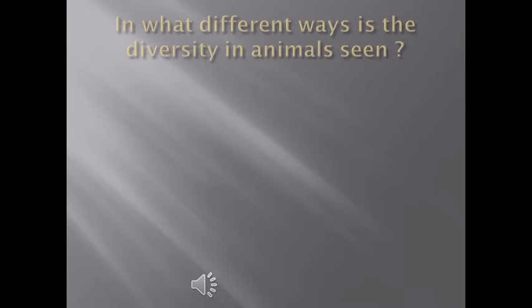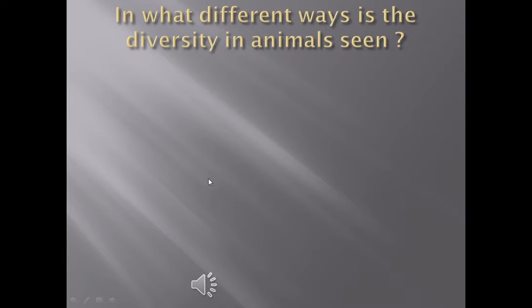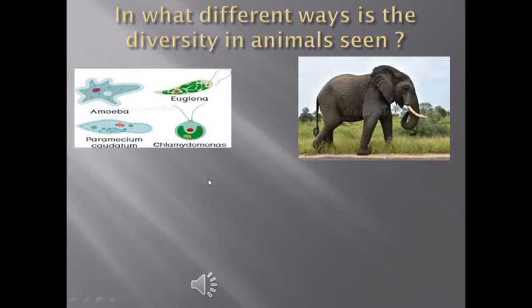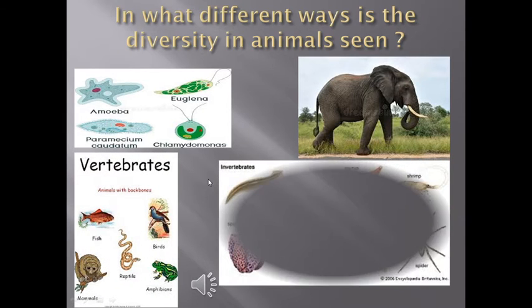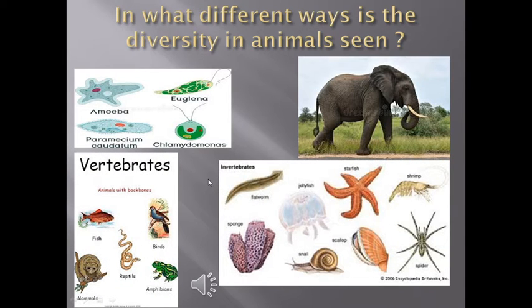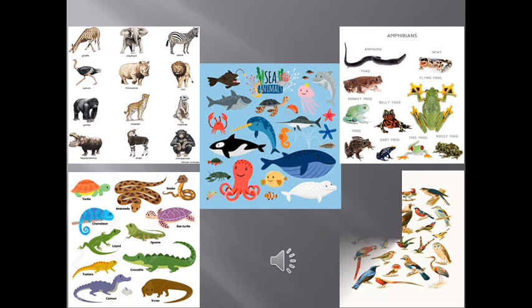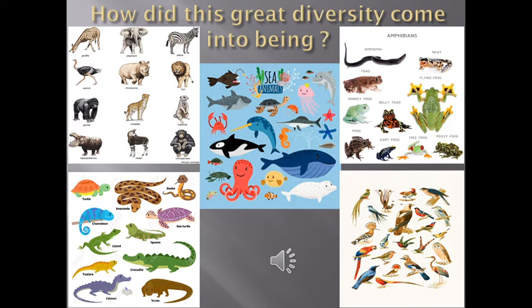Like plants, animals too show diversity. In what different ways is the diversity in animals seen? Some are unicellular, others are multicellular. Some are vertebrates whereas others are invertebrates. This world is full of a variety of animals — aquatic, terrestrial, amphibian, reptilian, aerial and so on. These observations give rise to the question: how did this great variety come into being?